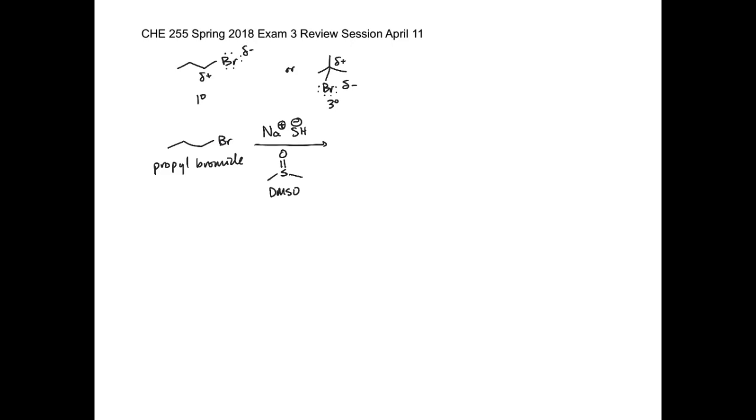If you were given just this and then the choices were, what would the product be? You've already classified it as a primary halide. You have a strong nucleophile that's bearing a charge, and then you have a polar aprotic solvent, so that's good for SN2.